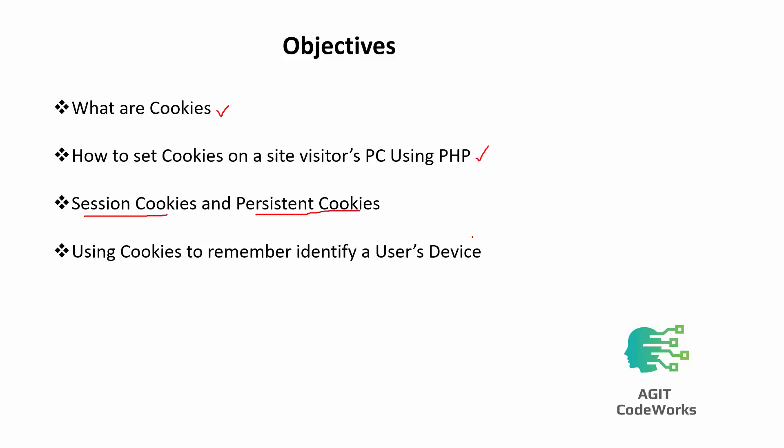A session is from when you open your browser to when you finish using it. A session cookie is a cookie that is deleted from your PC once the browser is closed — it lasts just for that browser session. A persistent cookie, on the other hand, can stay on your PC for a specific duration — a day, a month, a year — depending on what the developer specifies.